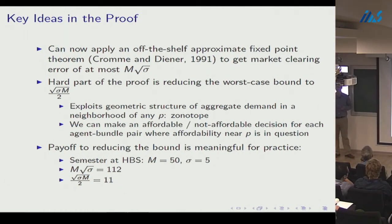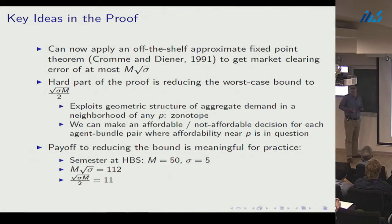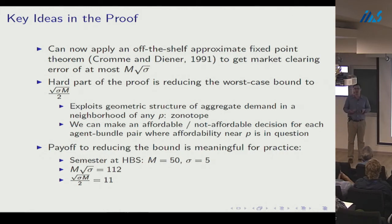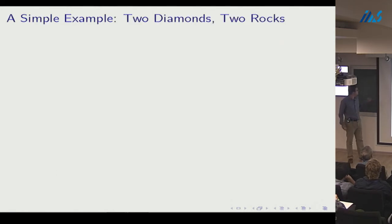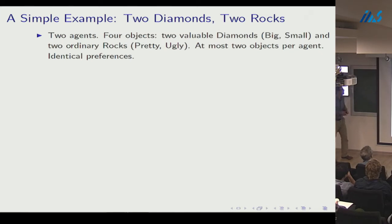A Euclidean distance of 11 is a relatively small amount of market clearing error for practical purposes, making the worst-case performance guarantee reasonable. Let me give a simple example to further explain the existence theorem and preview the fairness results: two agents, four objects — a big diamond, small diamond, pretty rock, and ugly rock — with identical preferences over these, and each agent can take at most two objects.